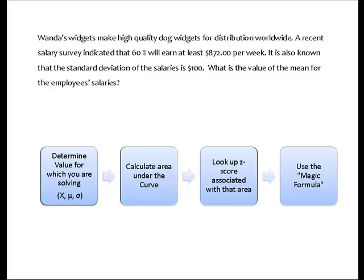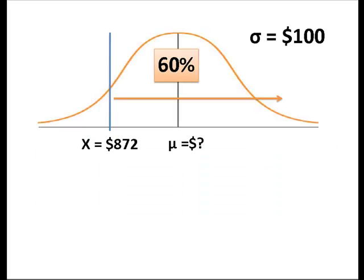So I am going to take this same four step approach. I am going to determine the value for which you are solving, then calculate an area under the curve using the rules of normal distribution. I am going to delve into the guts or the body of the z-score table to find a z-score associated with that area and then apply our magic formula to solve for that unknown value.